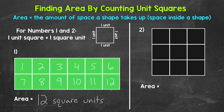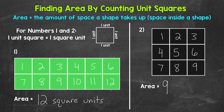Let's move on to number two, where we have a square. So let's find the area. How many unit squares cover this square? Well, 1, 2, 3, 4, 5, 6, 7, 8, 9. So the area of this square is nine square units.